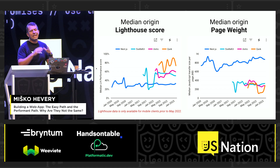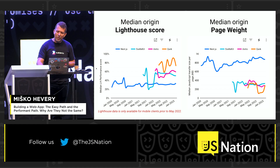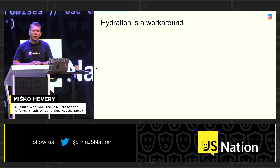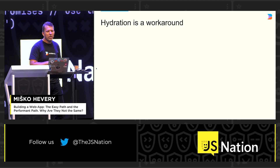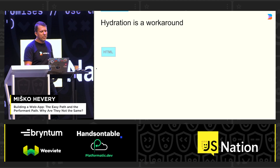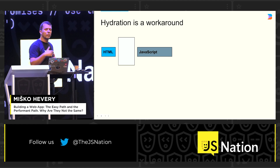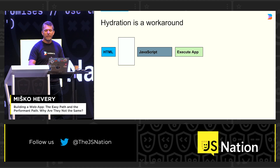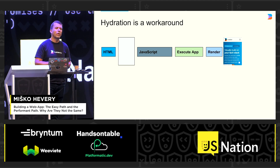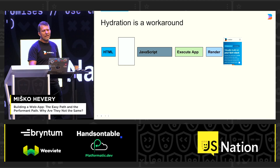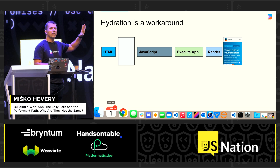That shouldn't be surprising — it should be self-evident that the less JavaScript you ship, the better. The problem is the way our applications work: we have this thing called hydration, and hydration is this interesting workaround we've created. Back in the day, before meta frameworks like Next.js, the way applications would boot is we would send HTML. The HTML would be empty, and into the HTML there would be a script tag that would load JavaScript. JavaScript would execute your application, the application would cause a render, and then you could interact with the website. But we said we really don't like the fact that there is a white screen there for several seconds.